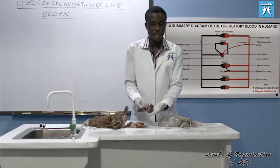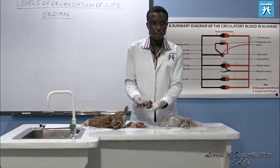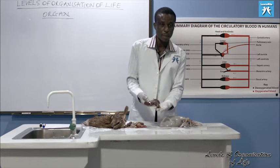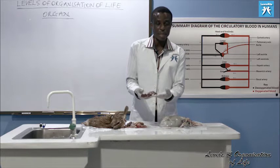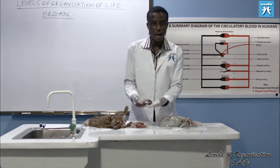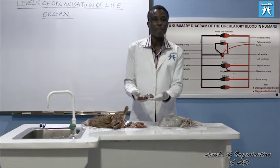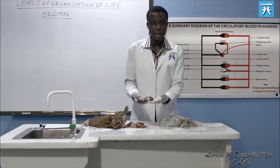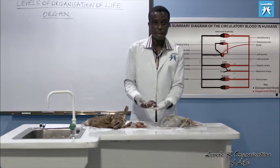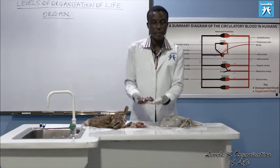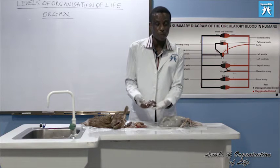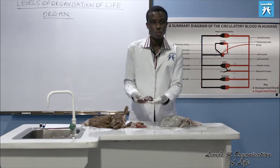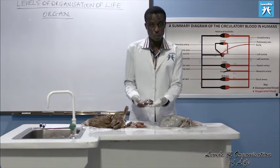So the liver is an organ, and the gallbladder is also an organ. The gallbladder is associated with the liver. The part of the alimentary canal associated with the liver is the duodenum.